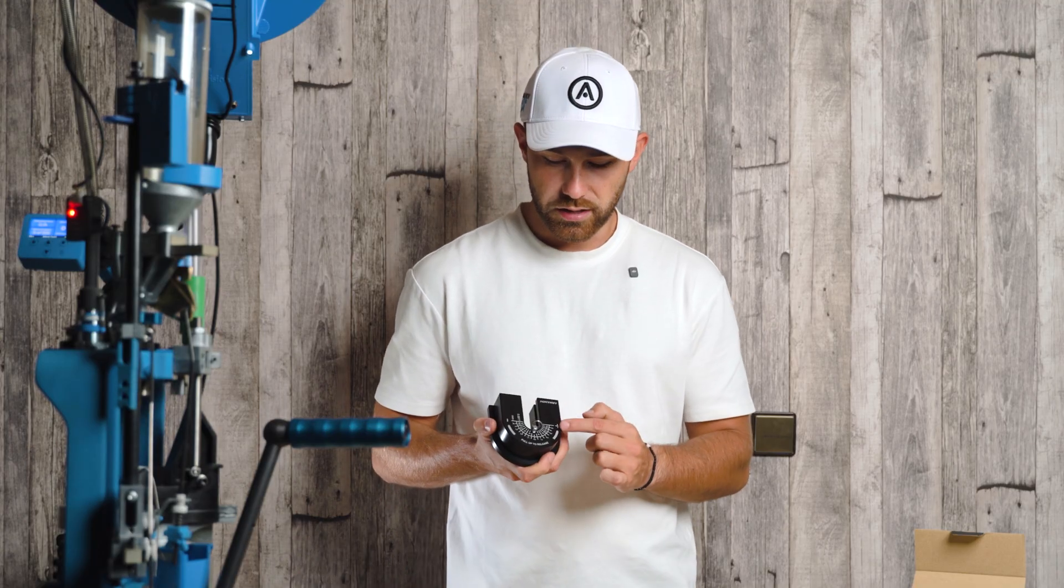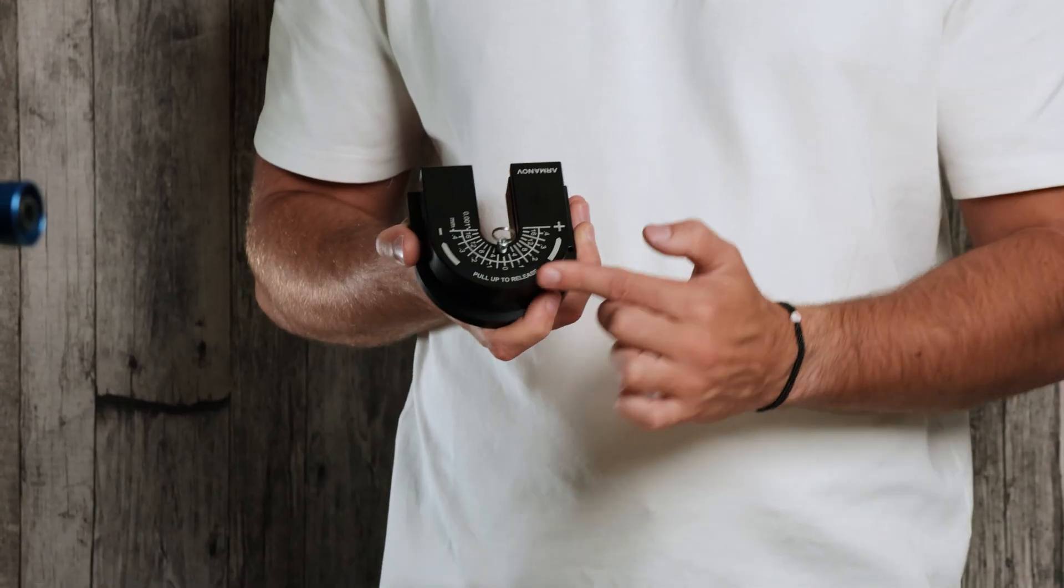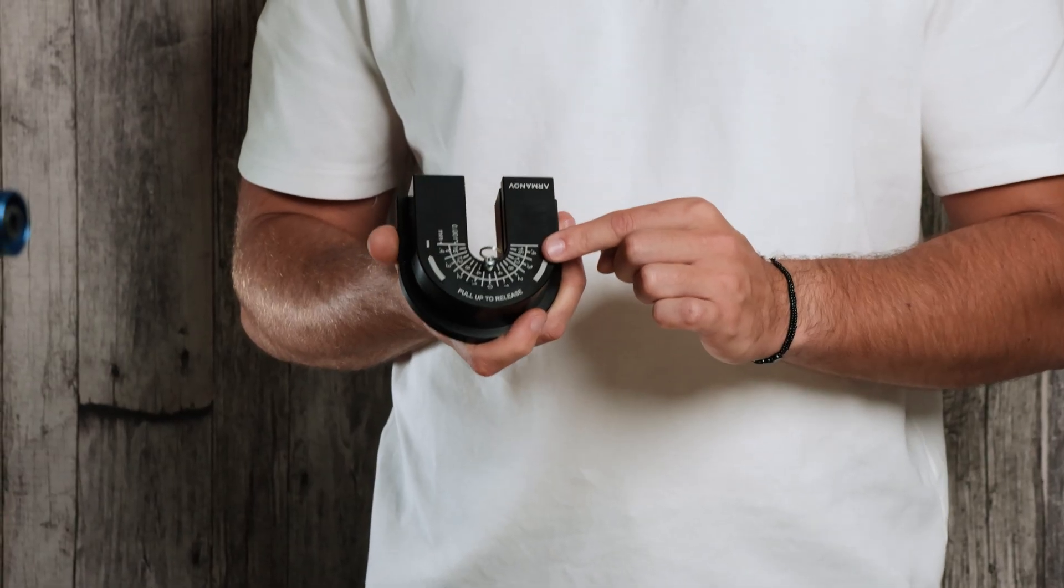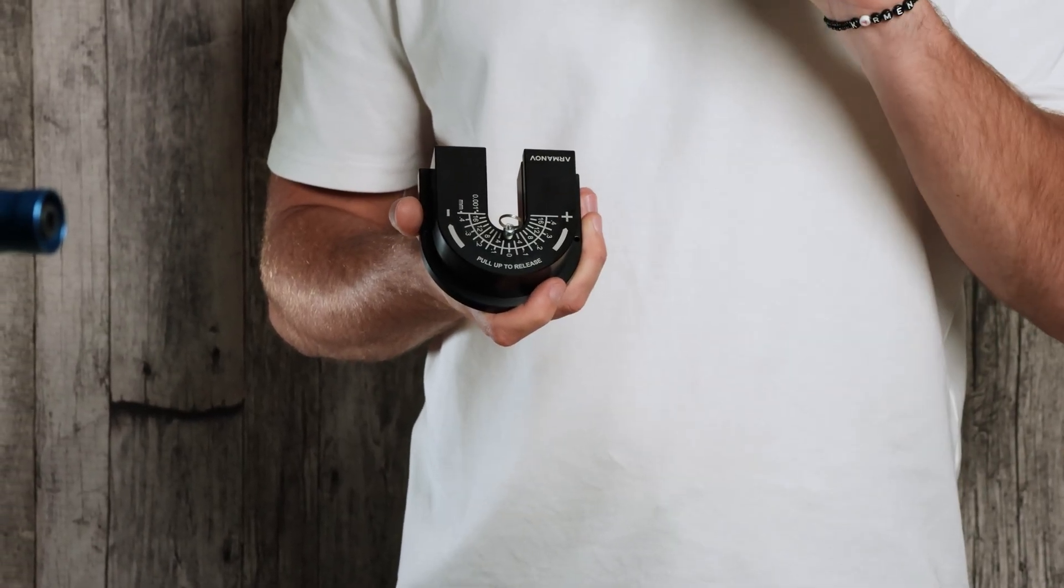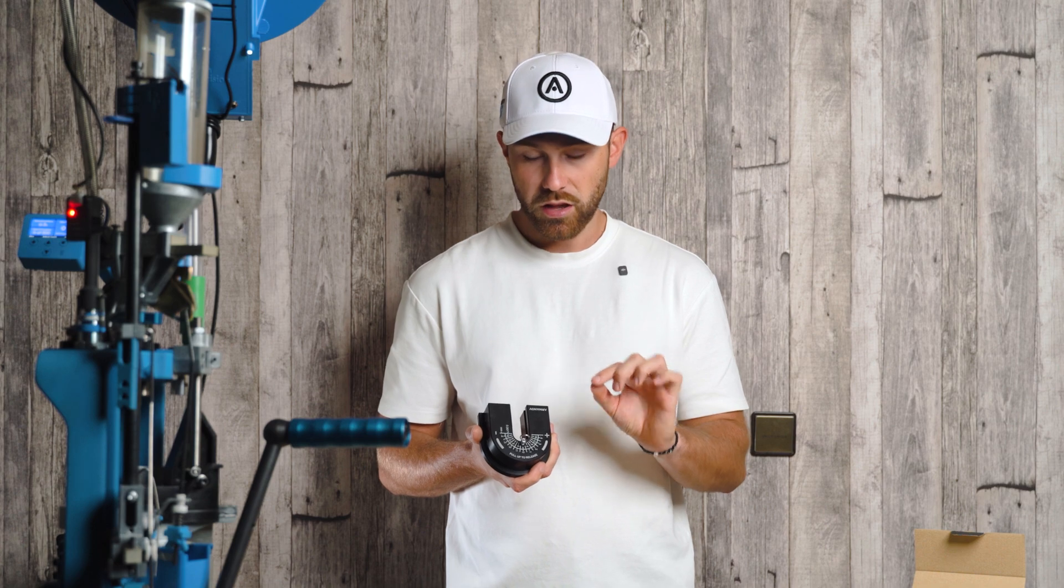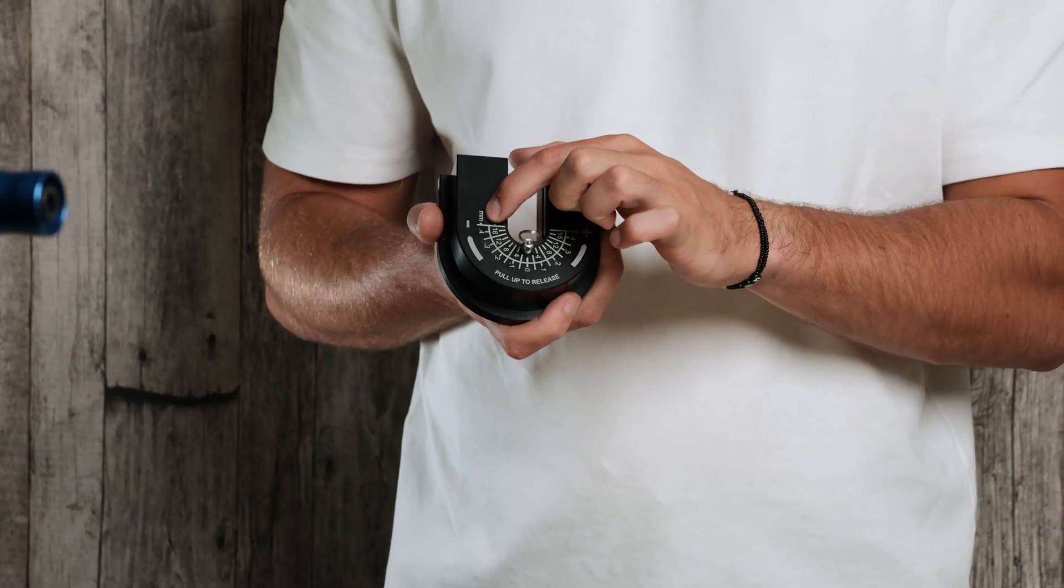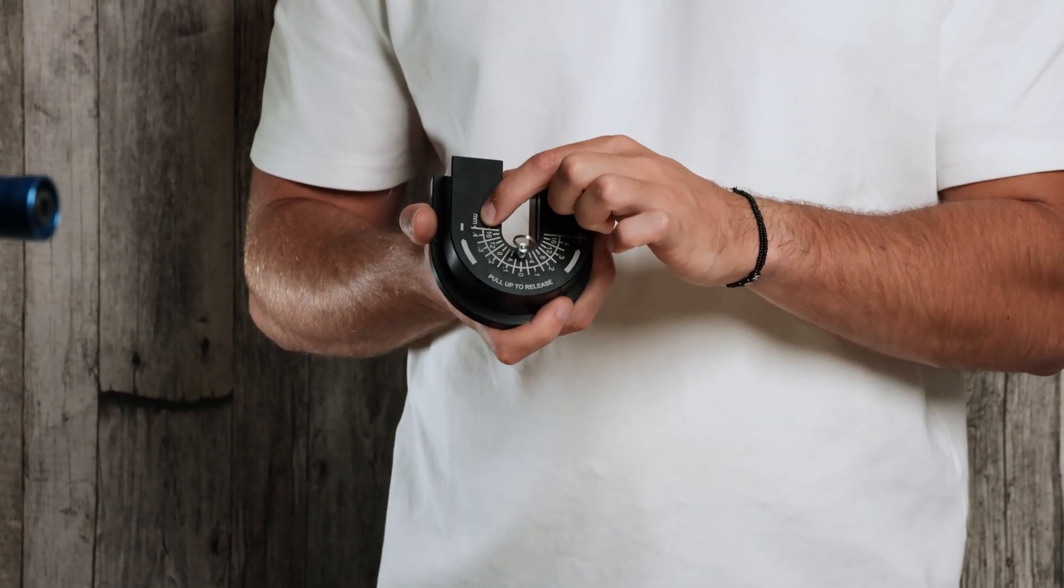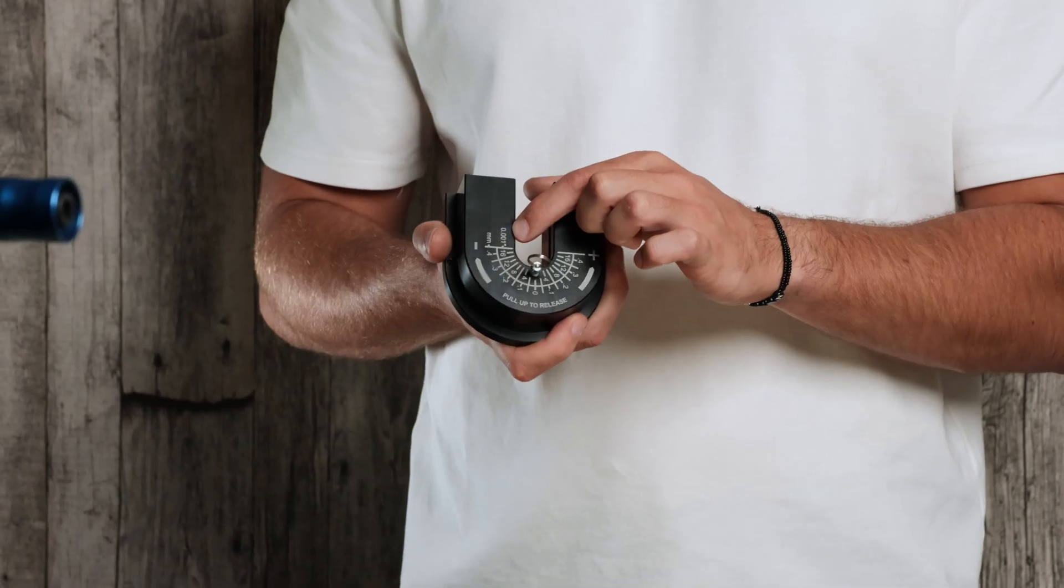This is also why the toolhead has an engraved super precise scale to enable very precise die height changes in increments of as little as 0.05 millimeter or two thousandths of an inch.